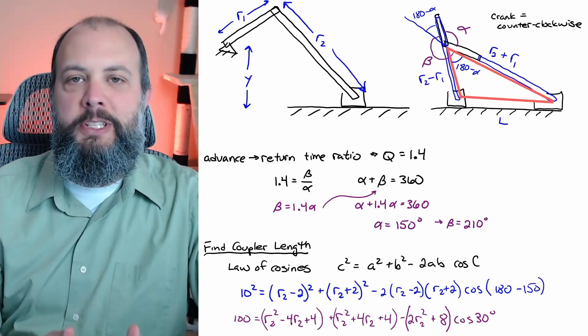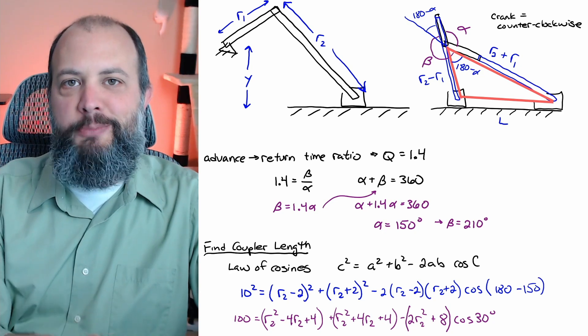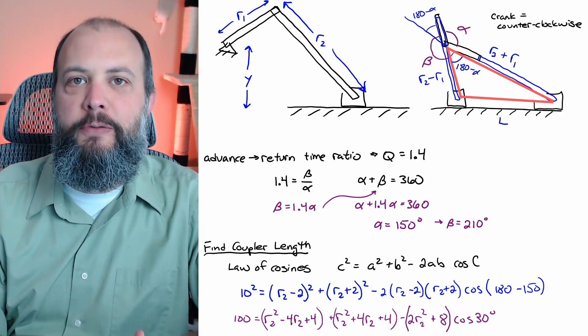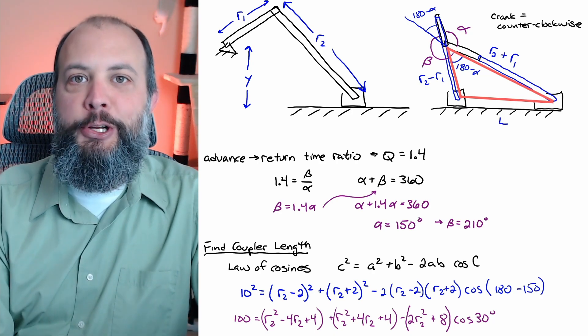So here I've written in the law of cosines and substituted in the 10 inch stroke length and 2 inch length that I've chosen for the crank along with the 150 degree angle for alpha.